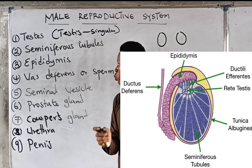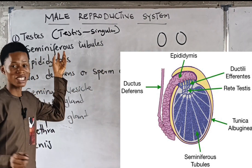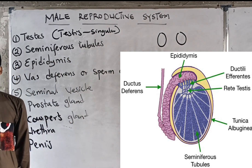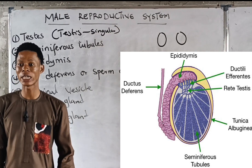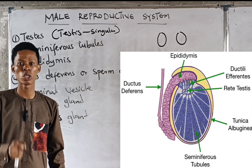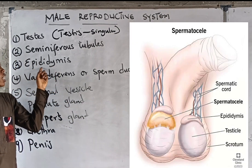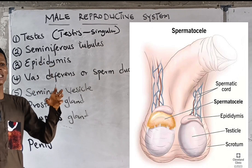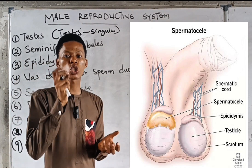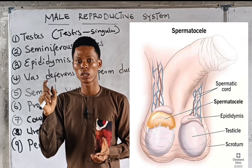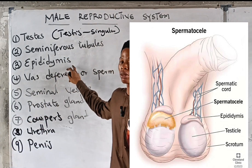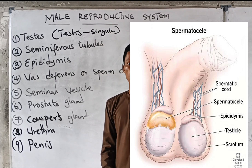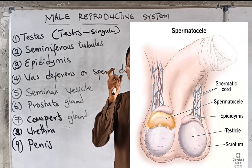As the sperm is produced in the seminiferous tubules, the sperm produced is immature. That immature sperm will be stored in the epididymis. The epididymis is where the immature sperm is stored until it matures. So the epididymis stores sperm temporarily — not permanently — until the sperm matures.